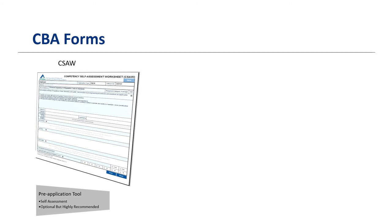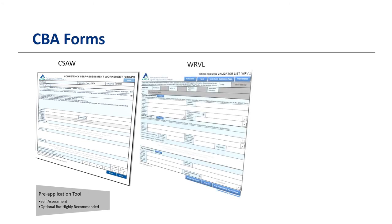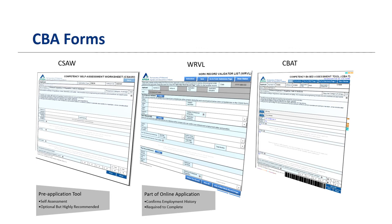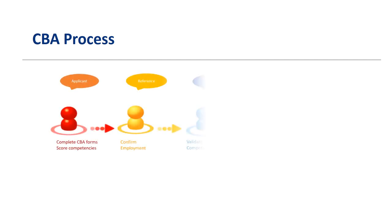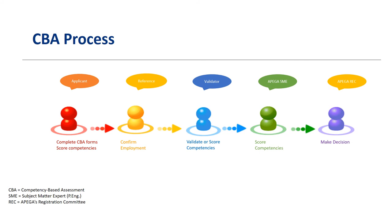To indicate their likelihood of meeting APEGA's experience requirement: Work Record Validator List, or WARVL — this form is part of the application which needs to be submitted; the information on this form helps APEGA confirm applicants' work experience and employment history. Competency-Based Assessment Tool, or CBAT — this form is also part of the application which needs to be submitted; the CBAT form collects information regarding applicants' specific competencies for professional membership with APEGA.